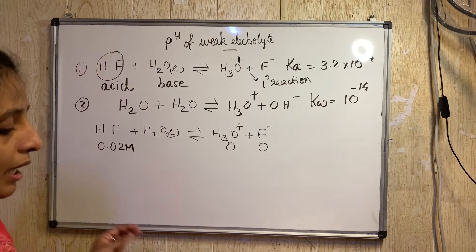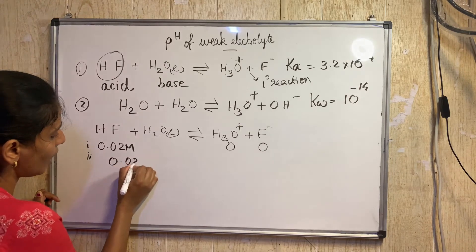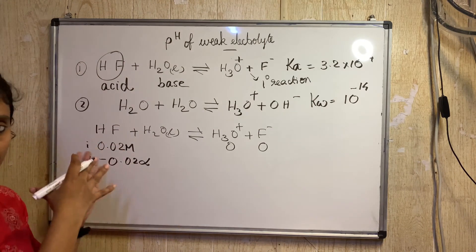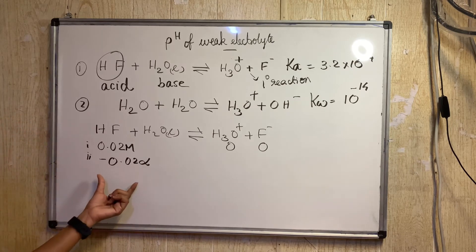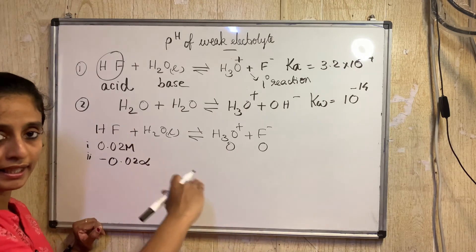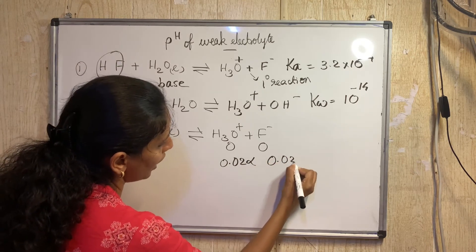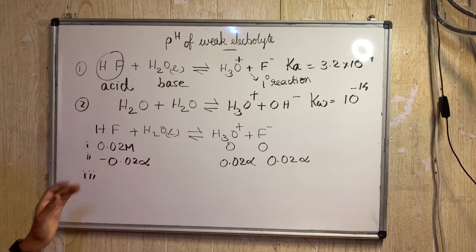The second part is change in concentration with respect to alpha. The change in concentration for HF is −0.02α, because HF is the reactant side and decreases. On the product side, H3O⁺ and F⁻ each increase by +0.02α. So we consider 0.02α for both product species.